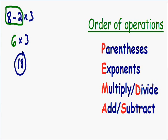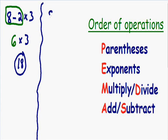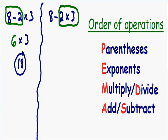So now I want to work out this same exact problem one more time. We have 8 minus 2 times 3. Instead of doing the subtraction first, we are going to do the multiplication first. So 2 times 3 is going to be the first step, and 2 times 3 is equal to 6.